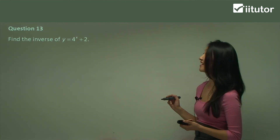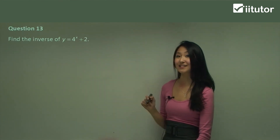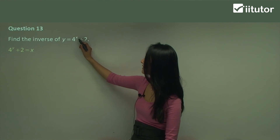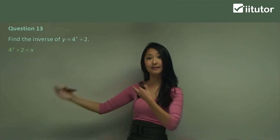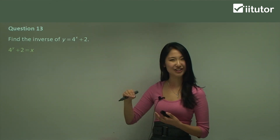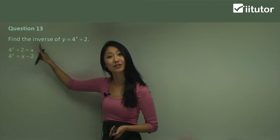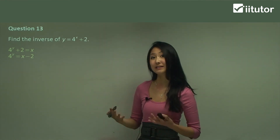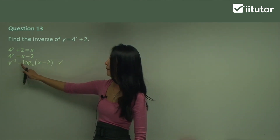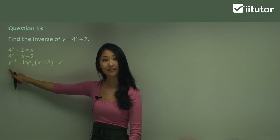In question 13, let's find the inverse of y equals base 4 to the power of x plus 2. Here we're not using base e — we're using a different base. Switching x and y, we have 4 to the power of y plus 2 equals x. We move the 2 over, leaving base 4 to the power of y. Then, using the logarithm rule — it doesn't matter whether the base is e, 4, or 100 — we get y equals log base 4 of (x minus 2), and it's important to put that in brackets.